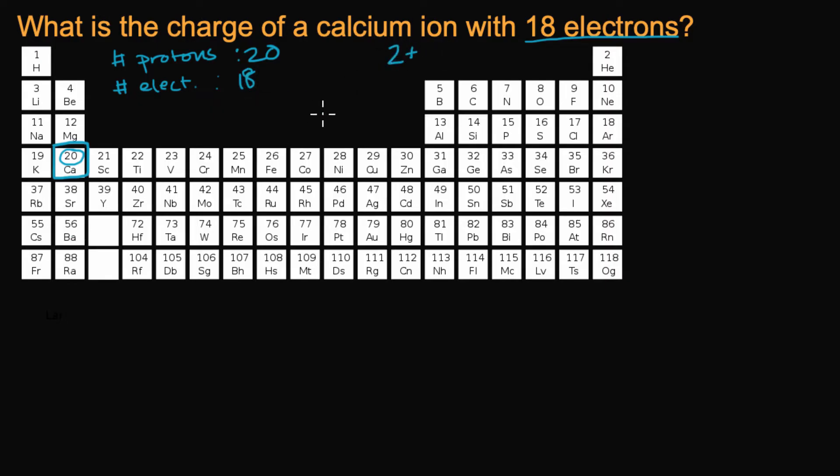So some people might write this as calcium two plus, just like that to show that it is a calcium ion. It's likely a situation where the calcium originally had 20 electrons and 20 protons. So then it would not be an ion. It would just be a neutral atom. But maybe it lost two of those electrons. And so then it got a positive two or a two plus charge.